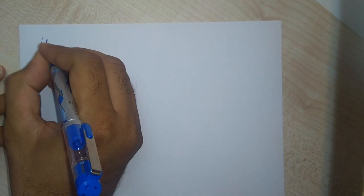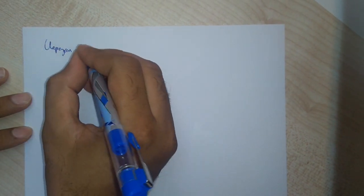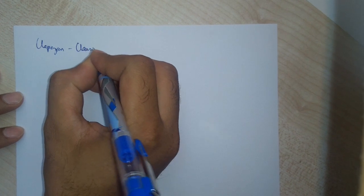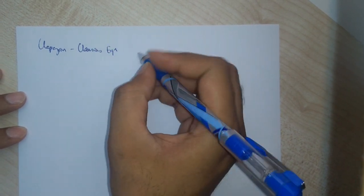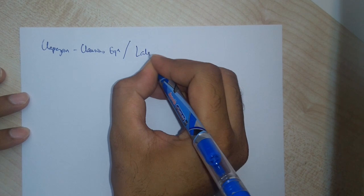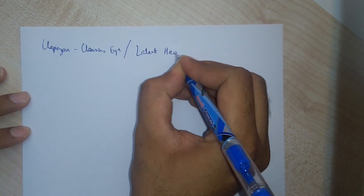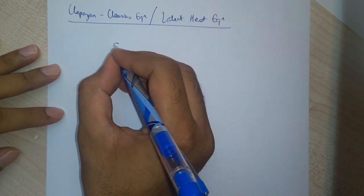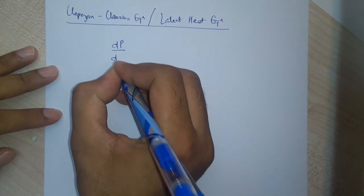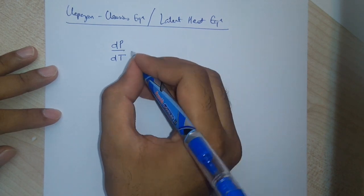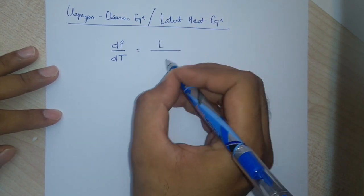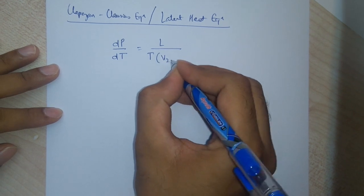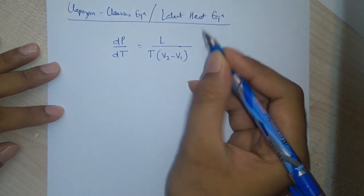Hello students. The topic for today's lecture is the Clausius-Clapeyron equation, also called the latent heat equation. The Clausius-Clapeyron equation is given as the change of pressure with respect to temperature equals the latent heat divided by temperature into V2 minus V1, which is the change in volume.